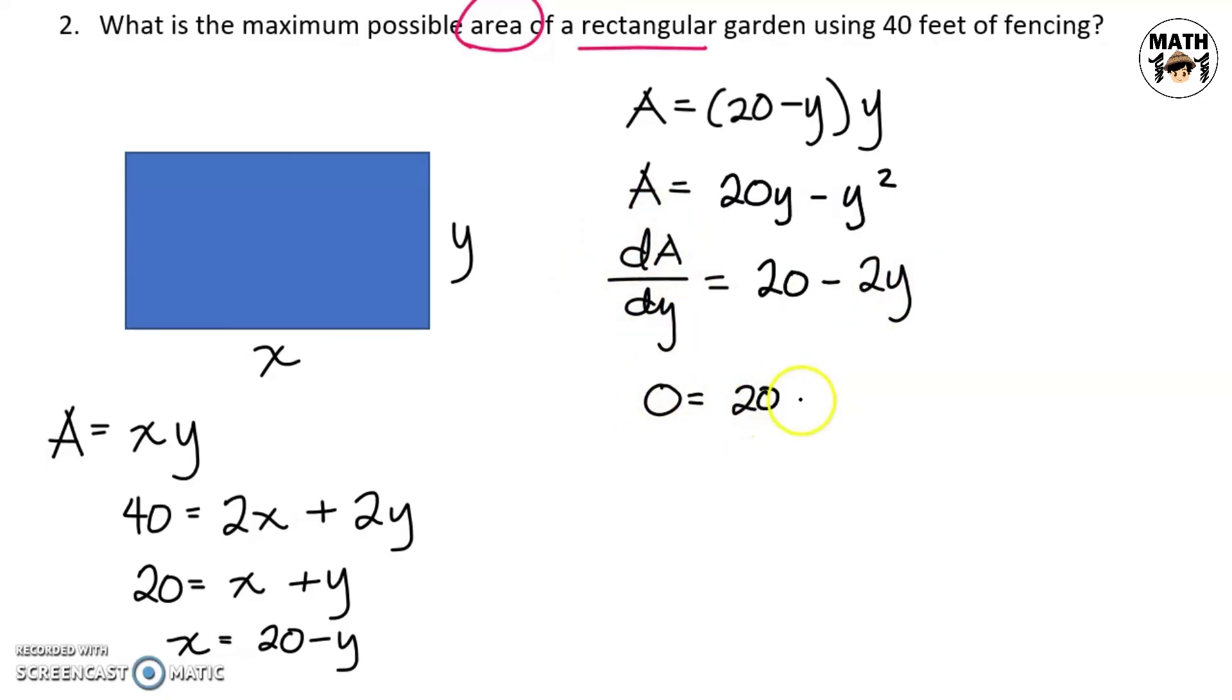0 equals 20 minus 2y and we'll get negative 20 equals negative 2y. Therefore, y equals 10 and solving for x or our length, we have 20 minus y. So, x equals 10.